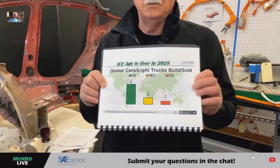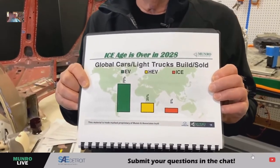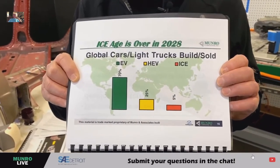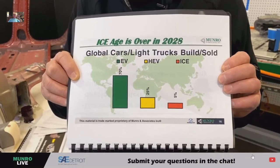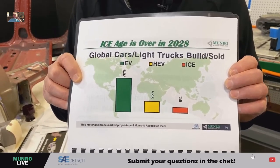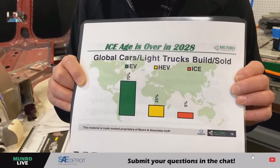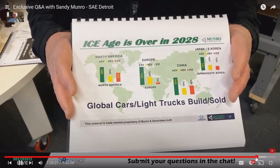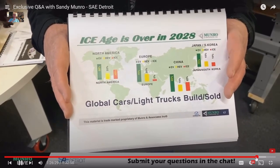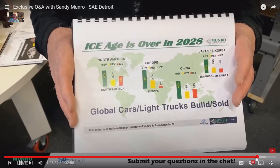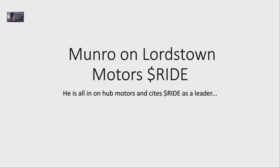Monroe's prediction for sales: Monroe has 70% of production being BEVs as far as vehicles go by 2028, with adoption at about 50% in the U.S. and 70% everywhere else.